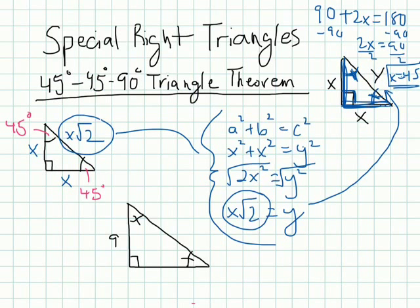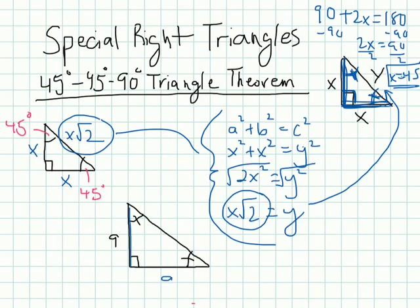In a 45-45-90 degree triangle, both legs are congruent, and the length of the hypotenuse is rad 2 times the length of the leg, which is x. Now let's look at this example. Since these two angles are the same because of the markings, this is a 45-45-90 triangle. So if one leg is 9, the other leg must also be 9, and the hypotenuse is rad 2 times the length of the leg: 9 rad 2. We used the relationships of the 45-45-90 triangle to find the missing sides.